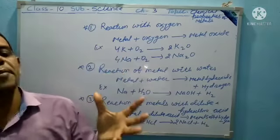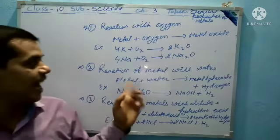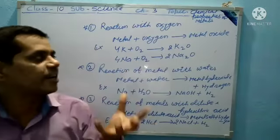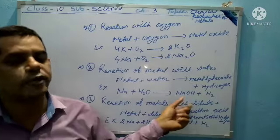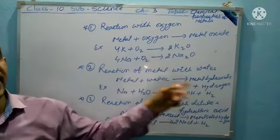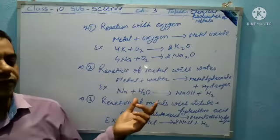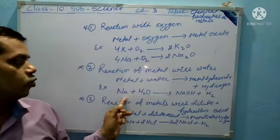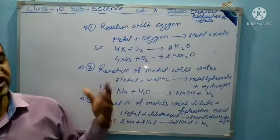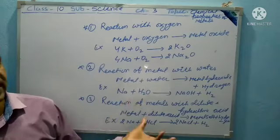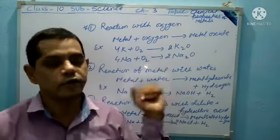Most metals do not react with water. Alkali metals react with water. The reaction of sodium metal with water forms sodium hydroxide and liberates hydrogen along with a lot of heat when reacting with water. So, sodium plus water produces sodium hydroxide plus hydrogen. This reaction generates more heat — sodium plus water reacts to give sodium hydroxide plus hydrogen.